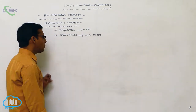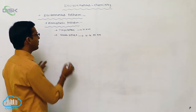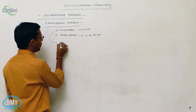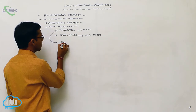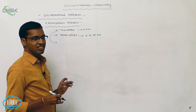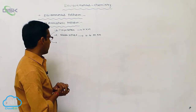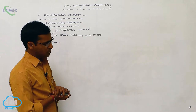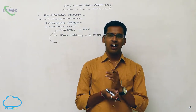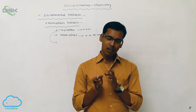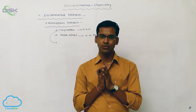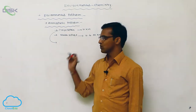The troposphere is polluted due to clouds, dust particles, and solid particles. The stratosphere is polluted due to nitrogen, oxygen, oxides of carbon, oxides of sulfur, and oxides of nitrogen.